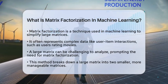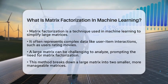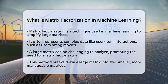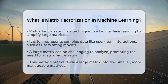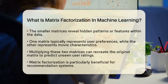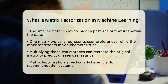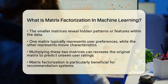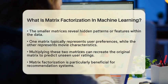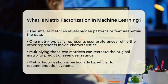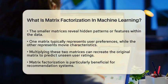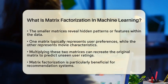Matrix Factorization helps by breaking it down into smaller matrices that are easier to handle. These smaller matrices reveal hidden patterns or features that help explain the data. For example, one matrix might represent user preferences, while the other represents movie characteristics.